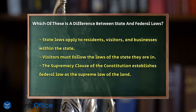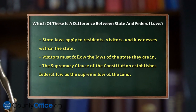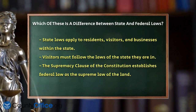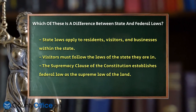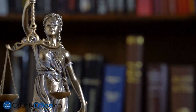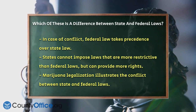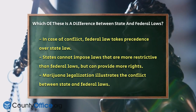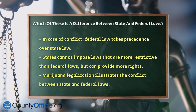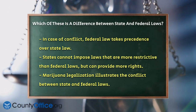Now, what happens if there's a conflict between state and federal law? The Supremacy Clause of the Constitution comes into play here. It states that federal law is the supreme law of the land, so if there's a conflict, federal law wins out. States cannot be more restrictive than federal laws, but they can give people more rights than federal law. For instance, if a state law contradicts a federal law, the federal law takes precedence. This has been a common issue in areas like marijuana use, where some states have legalized it, but it remains illegal under federal law.